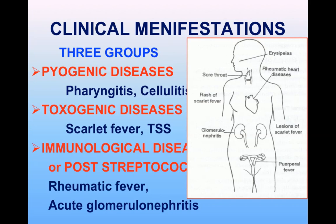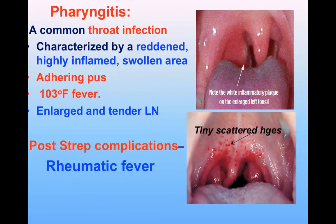Immunological or post-streptococcal diseases occur when antibodies against a component of the organism cross-react with normal tissue, or immune complexes form that damage normal tissue. These immunological reactions can cause marked inflammation of the heart or joints, but there is no organism present in these lesions.